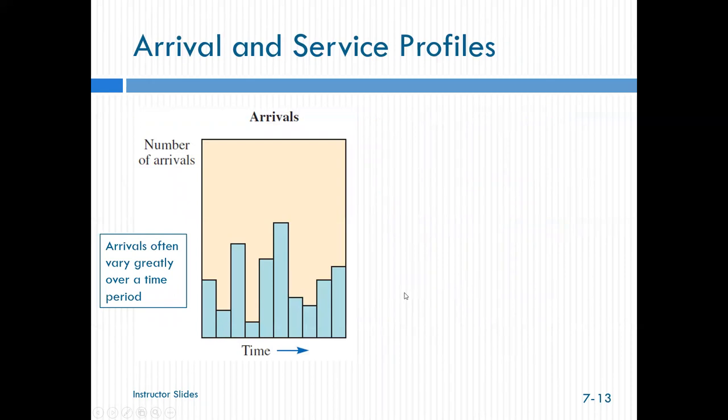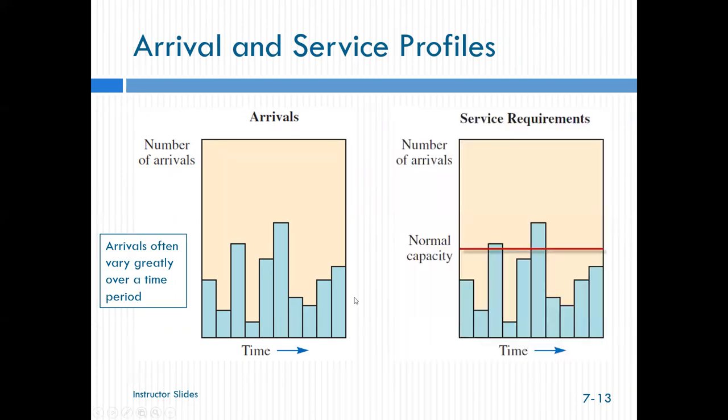So arrivals and service profiles. Arrivals often vary greatly over a time period. Like if you look at an airport, when do people arrive? Six o'clock in the morning, pretty low pace. Two o'clock in the afternoon, usually pretty busy. Unless it's Paducah, then it's six o'clock in the morning is really busy and noon is not. So then we have our service requirements and our normal capacity is here, but we obviously are going to have a couple of times where our arrivals exceed our capacity.